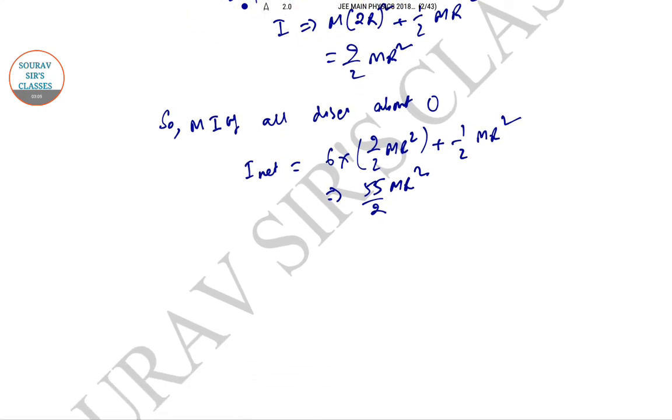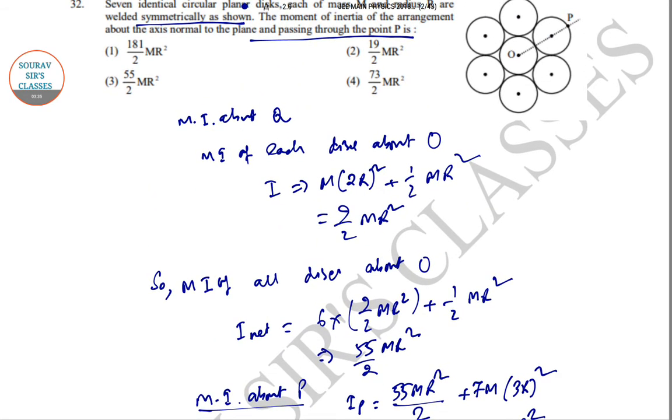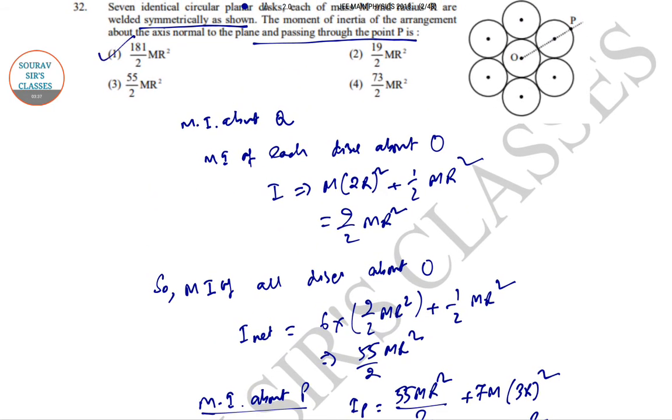So now moment of inertia about point P is IP equals 55 MR² by 2 plus 7M times 3R whole square. So 55 by 2 MR² plus 63 MR². This is 181 by 2 MR². Taking a look into the options, this is option number 1.